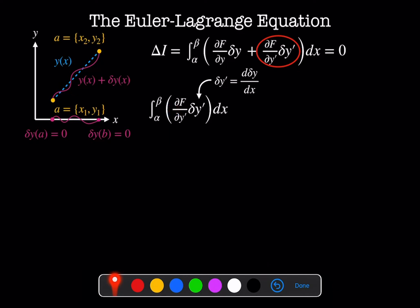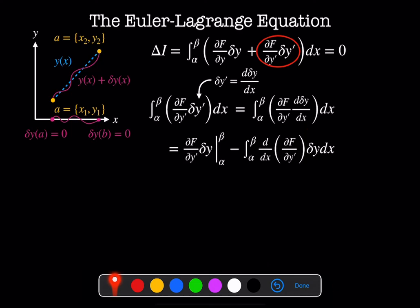Now we want to integrate this by parts. Let me substitute in this definition for delta y prime. We've got df by dy prime times d delta y by dx. And we're going to integrate this by parts. So we've got u times dv is equal to uv evaluated at our boundary conditions minus the integral of v times du. So first off, you'll note that the terms over here vanish because the definition of delta y evaluated at either of the boundary points is equal to zero.